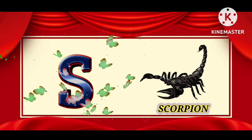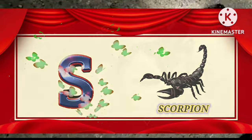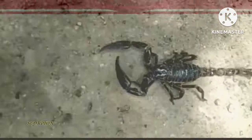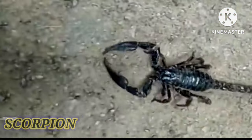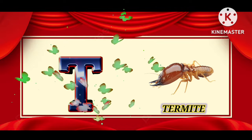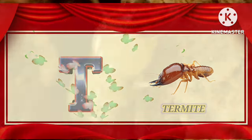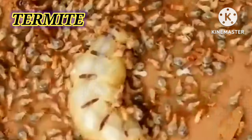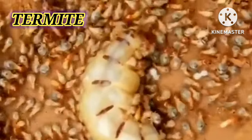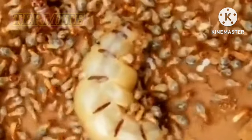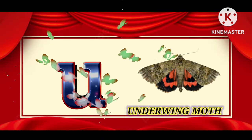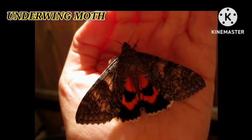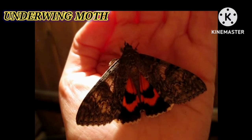S for scorpion. Scorpion. T for termite. Termite. U for underwing moth. Underwing moth.